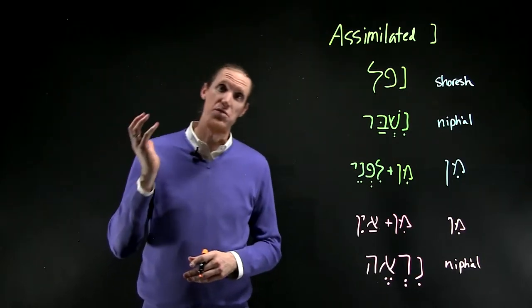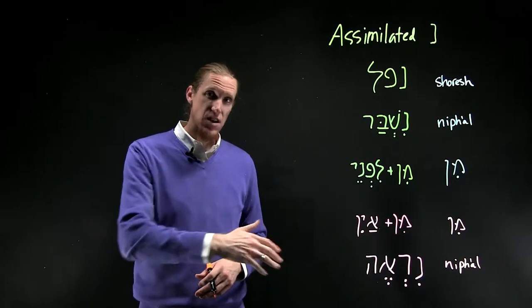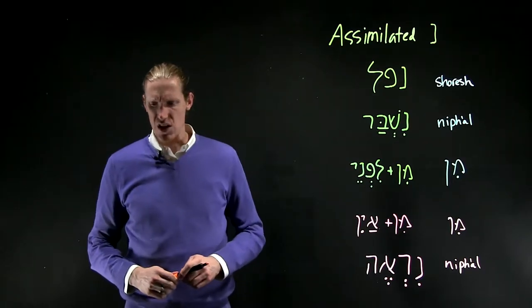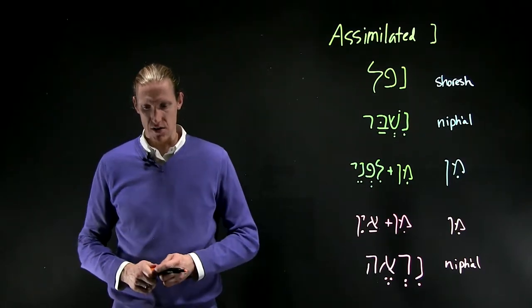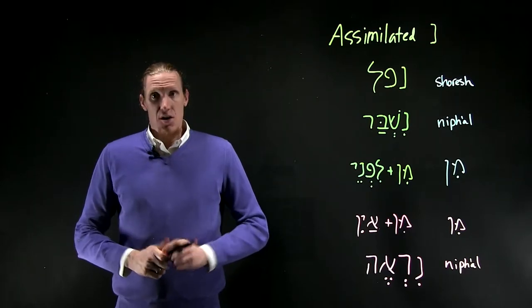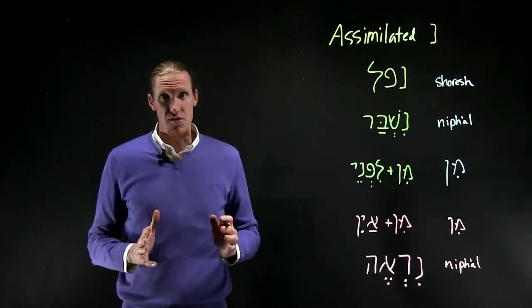or it will be rejected and will lengthen the previous letter, usually from Ahirek to Atsere. Those are the two traces. Let me talk about the first one first.